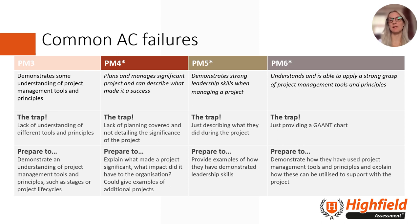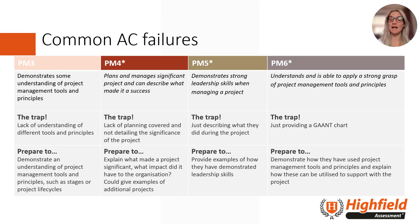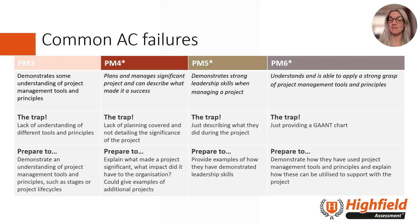Some of the common criteria being attempted but not passed focus primarily around project management. Apprentices need to be able to explain how they planned, managed, and led on a project and which project management tools they used. PM3 — demonstrate some understanding of project management tools and principles. The trap is a lack of understanding of those tools and principles; they should demonstrate understanding of things such as stages or project life cycles. PM4 — plans and manages significant projects and can describe what made it a success. The trap is a lack of planning covered and not detailing the significance of the project; learners should explain what made a project significant, what impact it had on the organisation, and could give examples of additional projects.